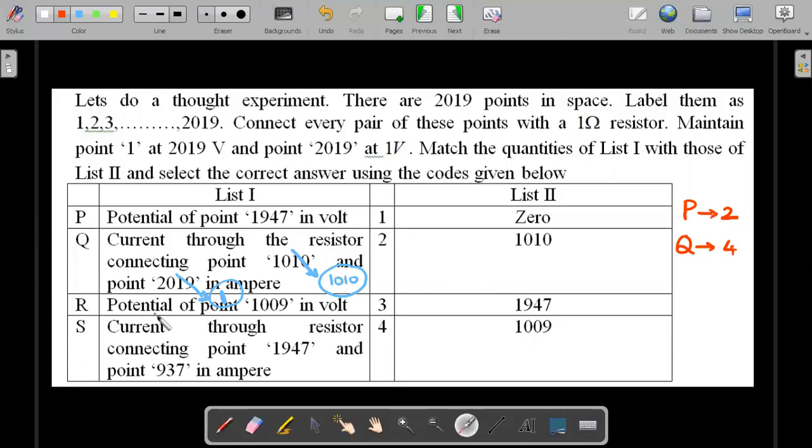Then potential of point 1009, I think 1009 or 1010, it is the same. If you remember, all the points other than one and 2019 are all at the same potential as 1010. So the answer should be this. The value of R matches to two again.